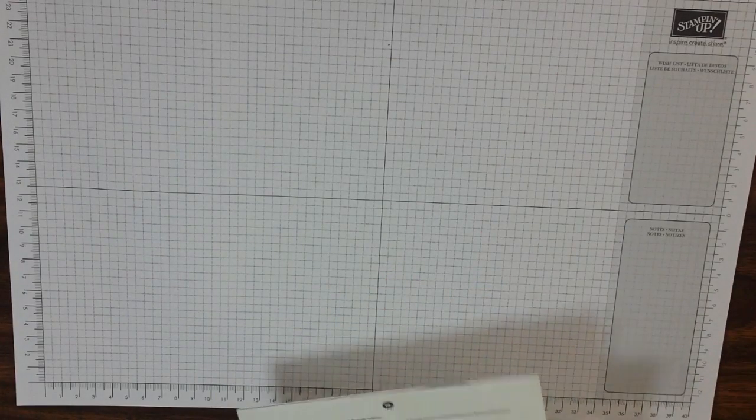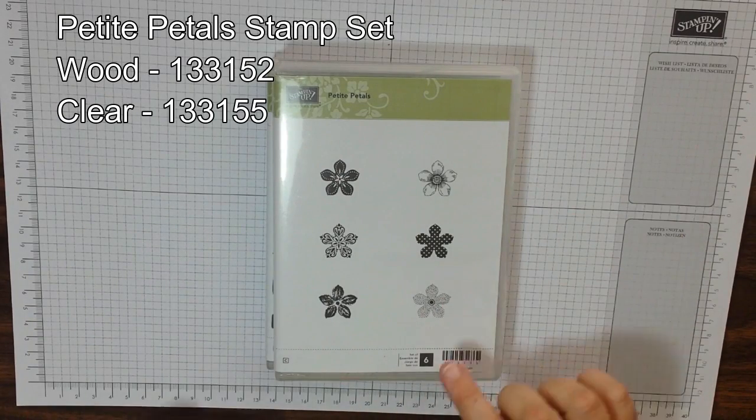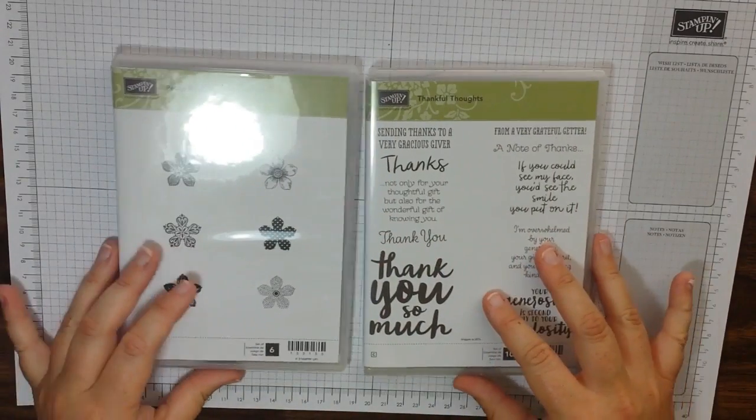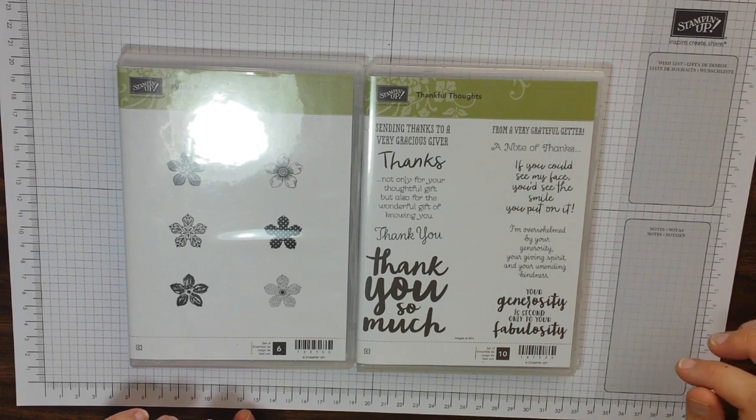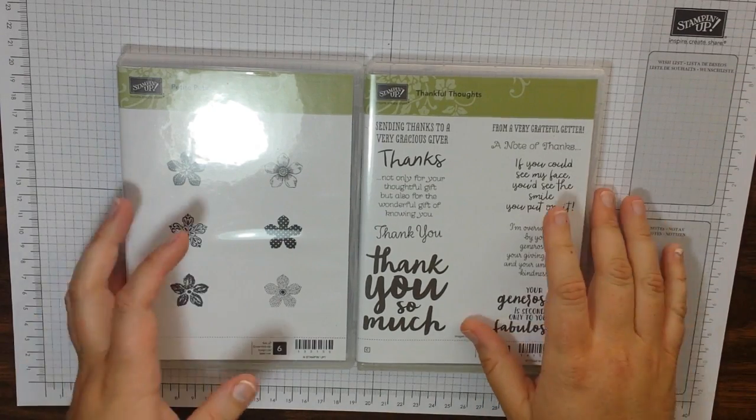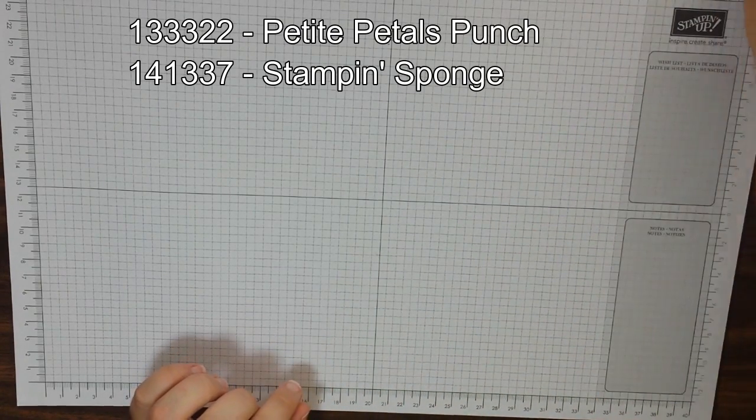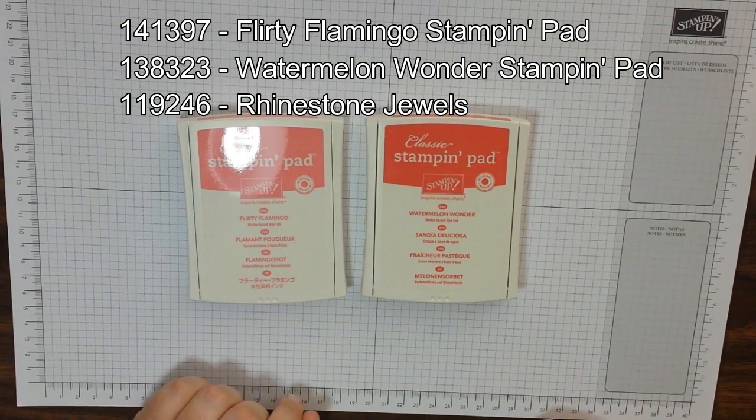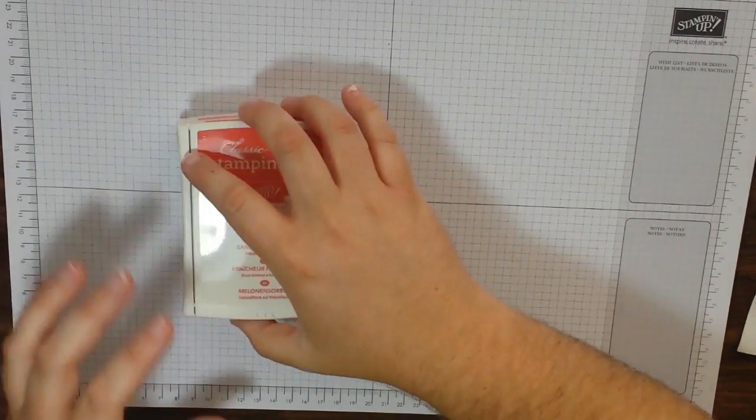So on top of that, what else are we going to be using today? We are using two stamp sets. The Petite Petals stamp set, and we're going to be using this one here. In my original I used this one here, but I wanted to make it a little bit different. And we're also going to be using Thankful Thoughts. I'm going to be using this Thanks and your generosity is only second to your fabulosity. So I'm going to be using those two today as well. And then we need Snail, our Petite Petals punch, a sponge, as I said, Flirty Flamingo and Watermelon Wonder ink. And top it all off, some rhinestones. So let's go ahead and get started.